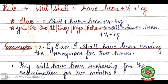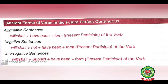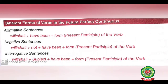So the rule for an affirmative sentence of future perfect continuous tense is: will/shall plus have been plus V1 plus ing — that is, the present participle form of the verb. To make it negative, we will add 'not' with 'will' or 'shall', and our rule will be: will/shall plus not plus have been plus V1 plus ing.